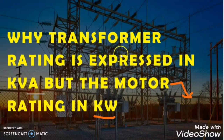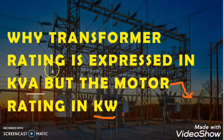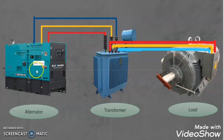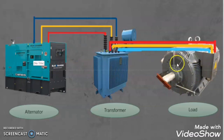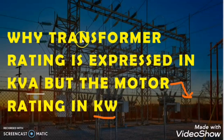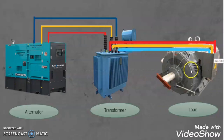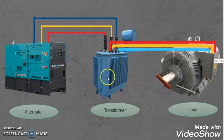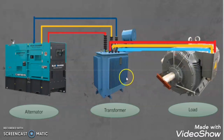In this video we will cover why the transformer rating is given in kVA (apparent power) and why the motor rating is given in kW (active power). To understand this, let us take a simple single line diagram (SLD). Here I show an alternator — it can be a substation also. There is one transformer fed from the substation, and this transformer is feeding a load. For simplicity I took a motor here, but this load can be anything.